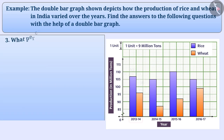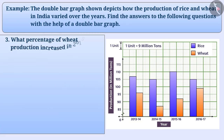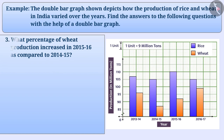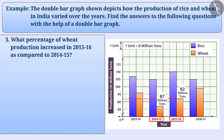What percentage of wheat production increased in 2015-2016 as compared to 2014-2015? We see that wheat production is 87 million tons in 2014-2015 and 92 million tons in 2015-2016.